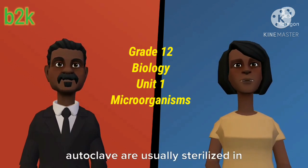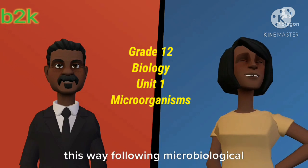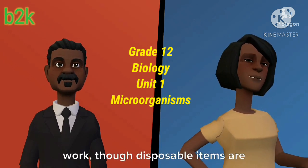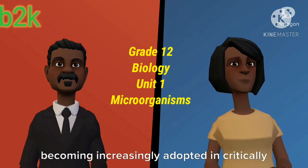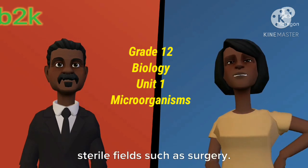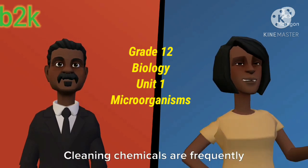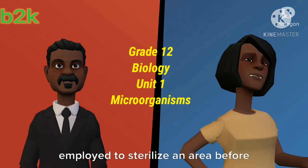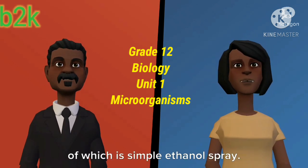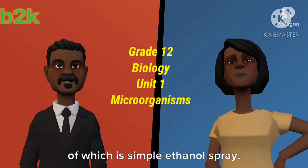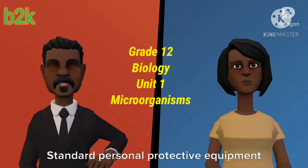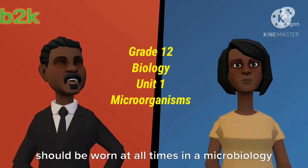Tools, clothing, and equipment able to withstand the pressures and temperature of an autoclave are usually sterilized in this way following microbiological work, though disposable items are becoming increasingly adopted in critically sterile fields such as surgery. Cleaning chemicals are frequently employed to sterilize an area before and after work, among the most common of which is simple ethanol spray.